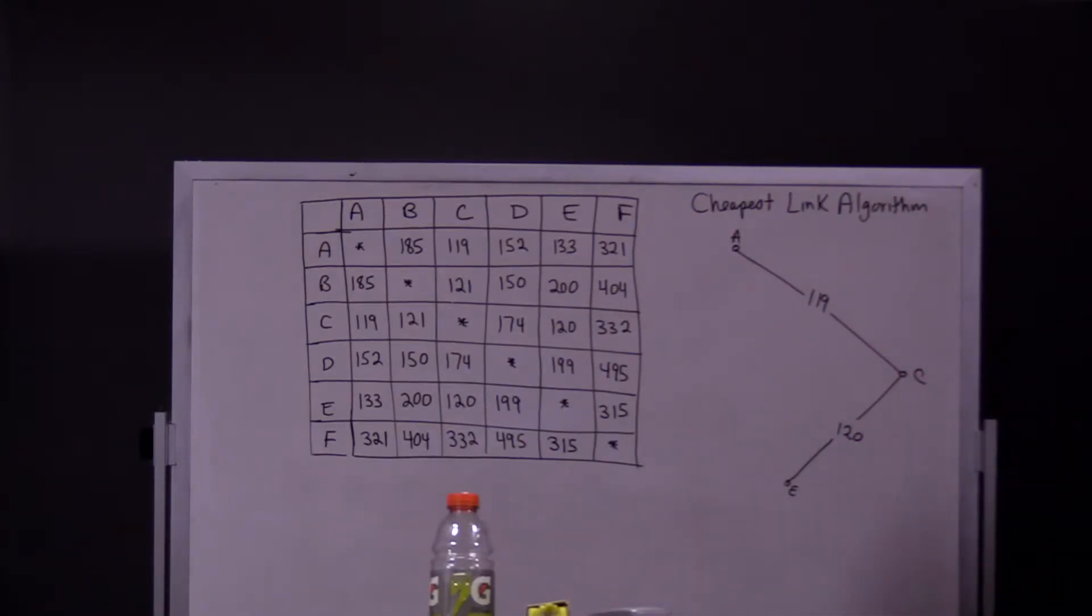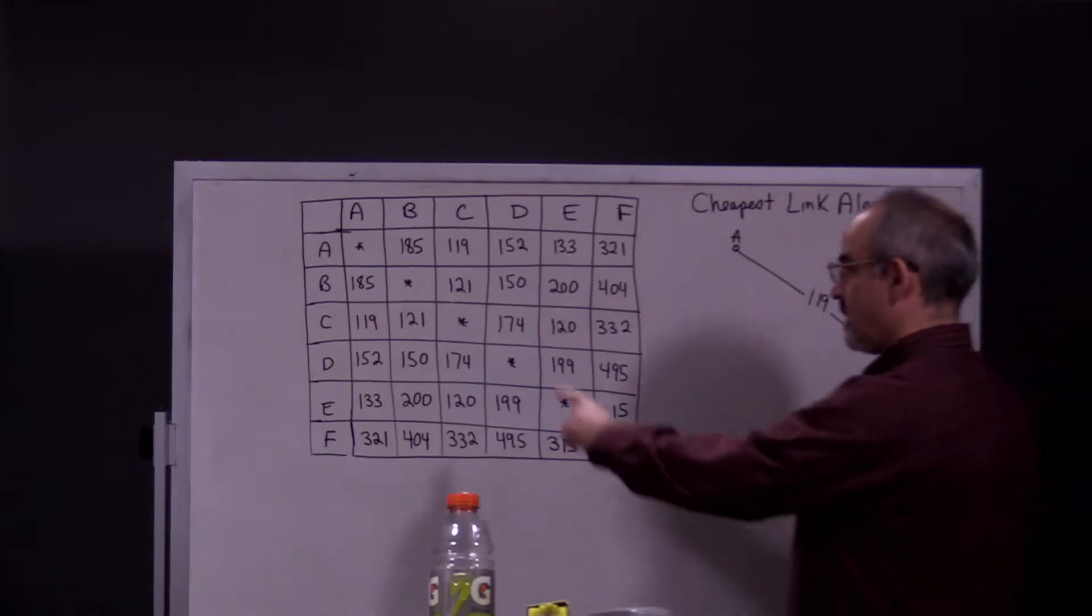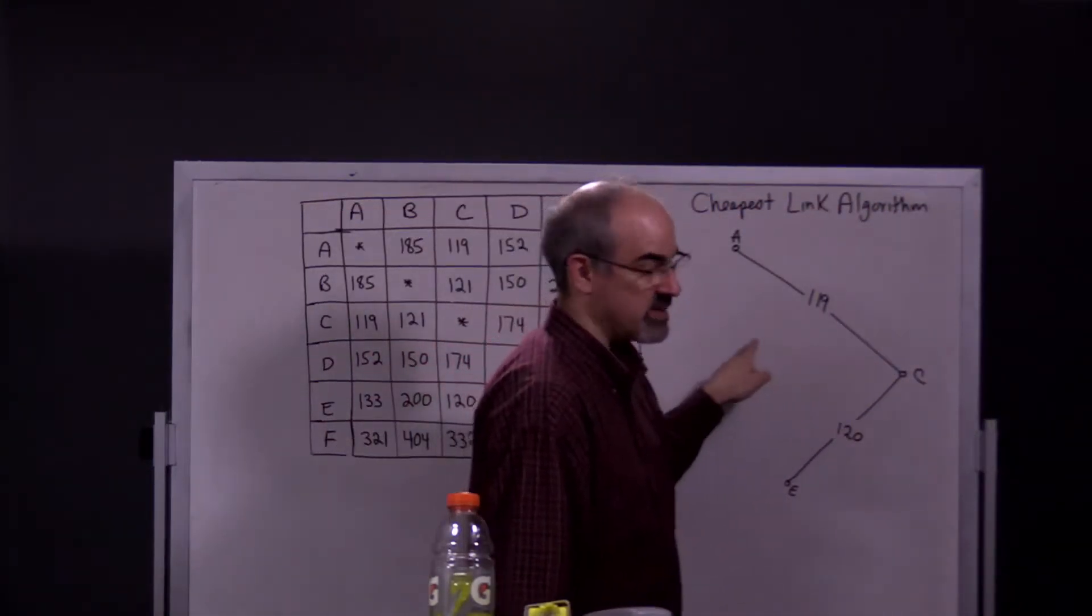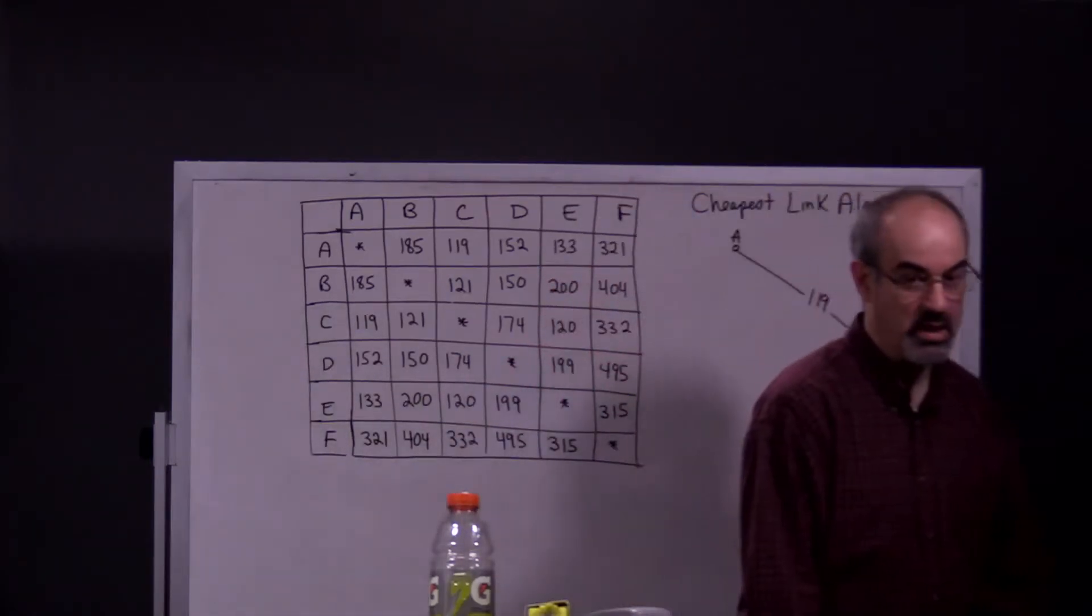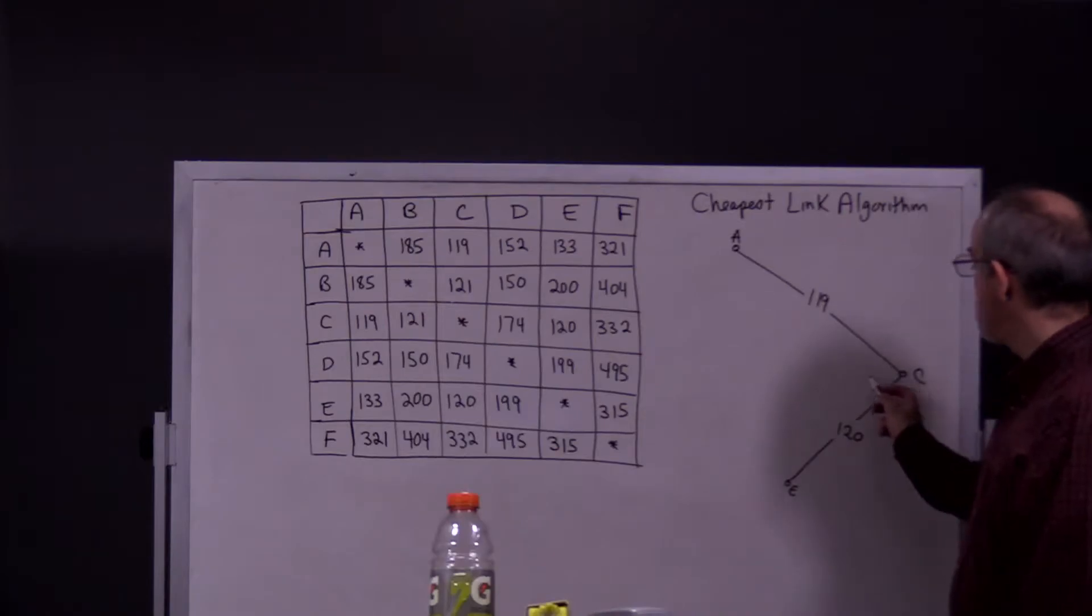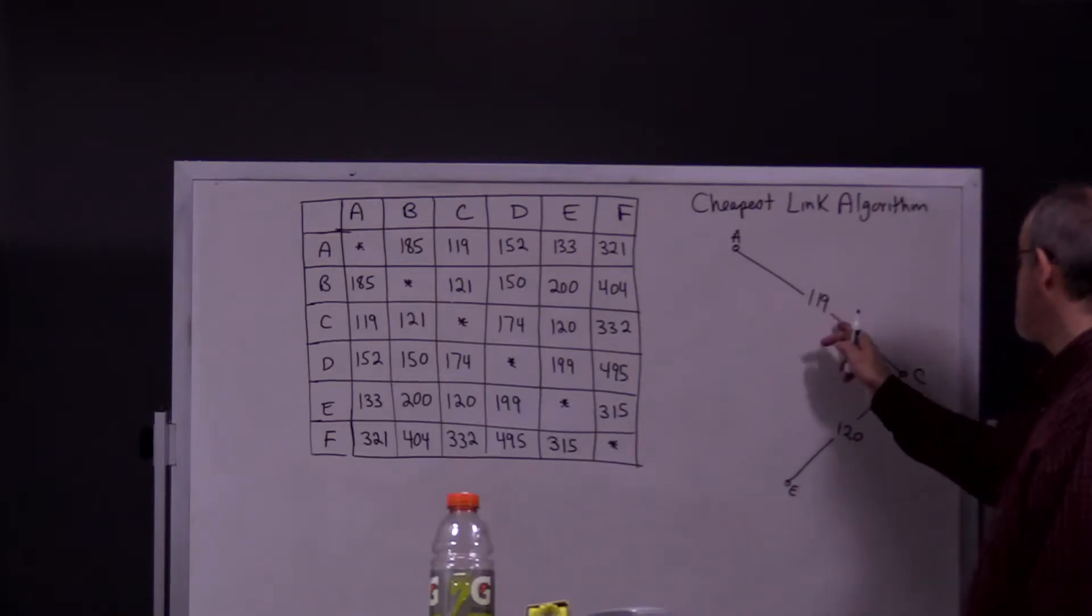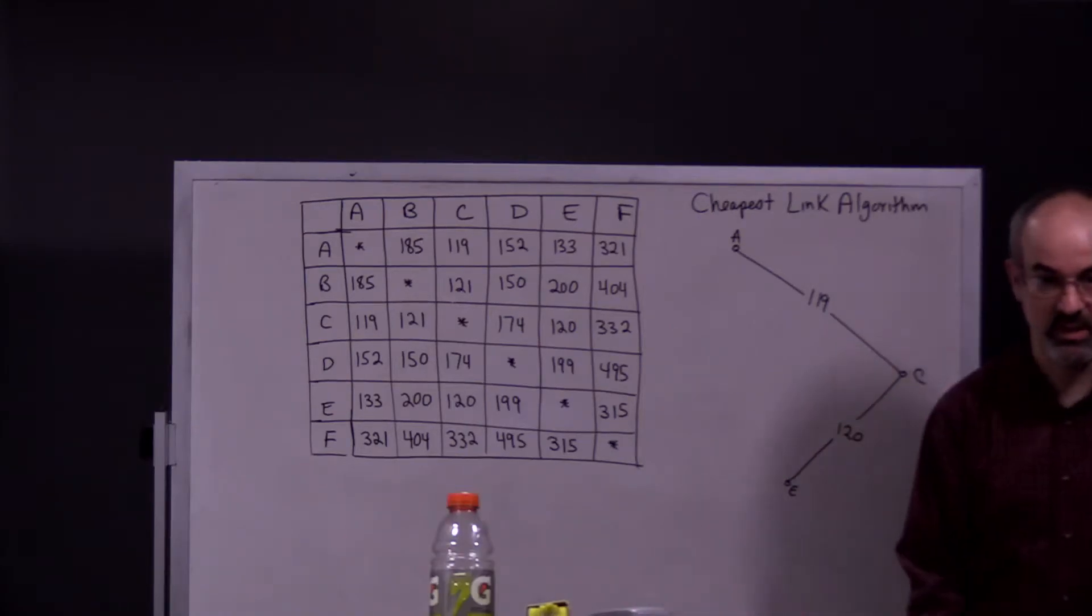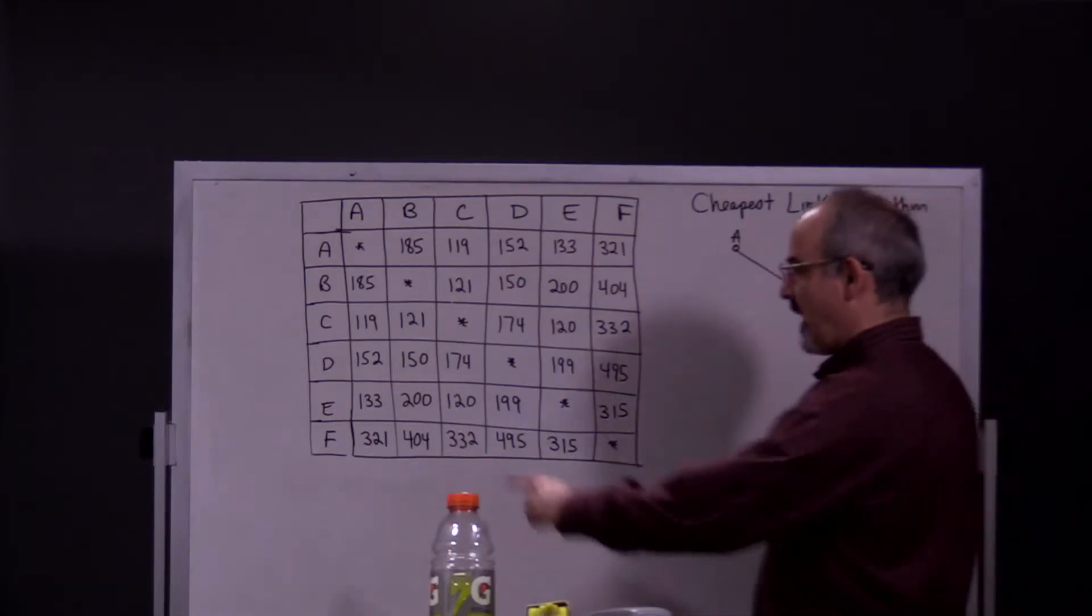When you look at your next shortest edge, it's going to be B to C. But you're not allowed to do B to C because we already have two edges coming into C. So if we actually drew the one that goes from B to C, that means we'd be going into C, leaving C, then coming back to C which you're not allowed to do. So we can't use this edge.